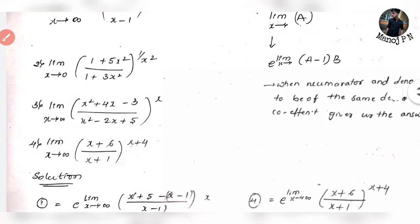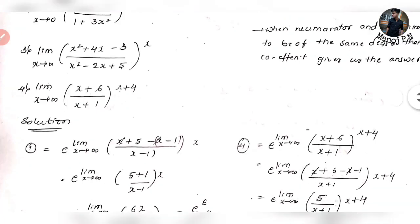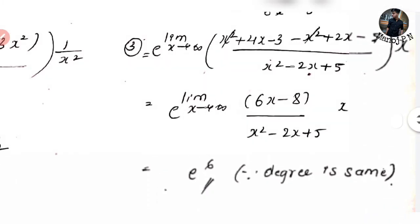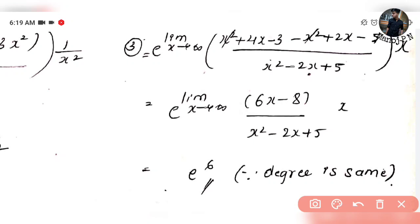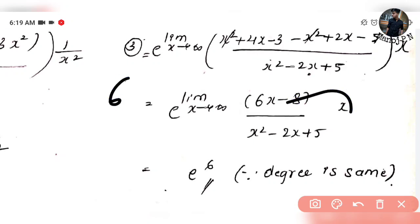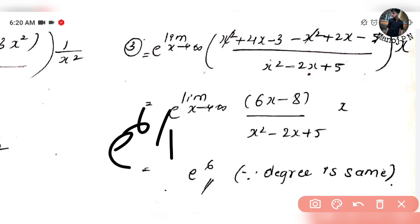Next question: limit x tends to infinity of x squared plus 4x minus 3 divided by x squared minus 2x plus 5, whole raised to power x. Using the same formula: numerator minus denominator gives x squared plus 4x minus 3 minus x squared plus 2x minus 5. The x squared terms cancel, giving 4x plus 2x equals 6x, and minus 3 minus 5 equals minus 8, so 6x minus 8. Since degree is the same, the coefficient gives e raised to power 6 divided by 1, which is e to the power 6.